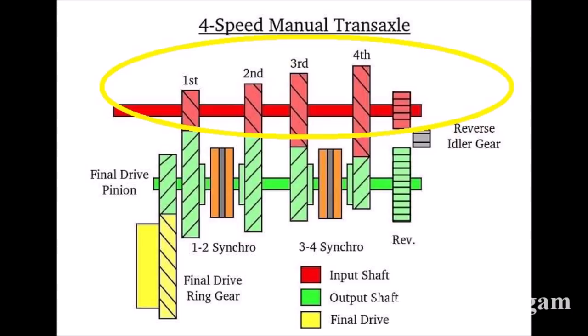Here you can see the first gear. The red color is small. The green color is large. The red color is the primary shaft. It is small here. The secondary shaft is much larger.